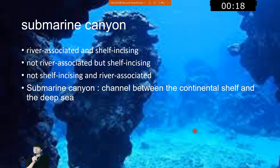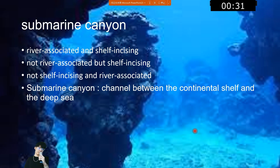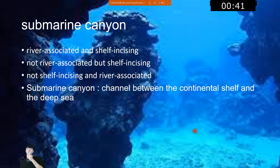Submarine canyons can be classified into three types. The first is river-associated and shelf-incising. The second is not river-associated but shelf-incising. The third is not shelf-incising and not river-associated. The importance of submarine canyons is that they are a channel between the continental shelf and the deep sea, guiding gravity flows along the deep sea floor.